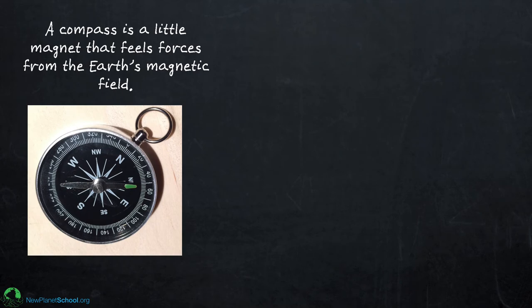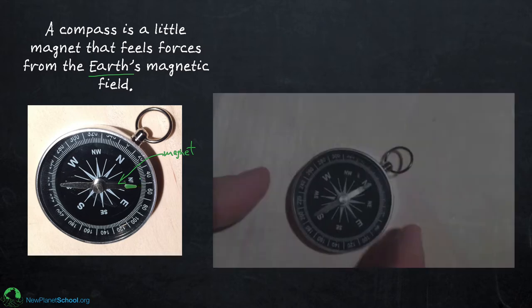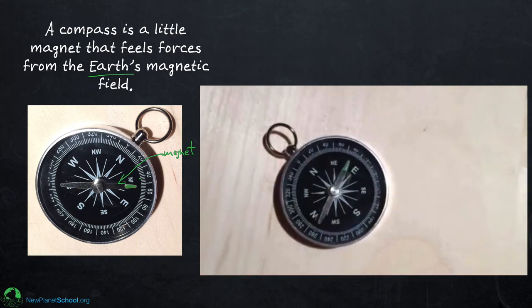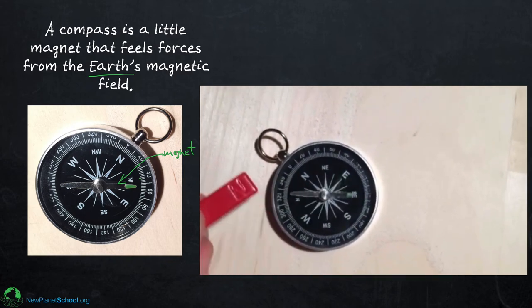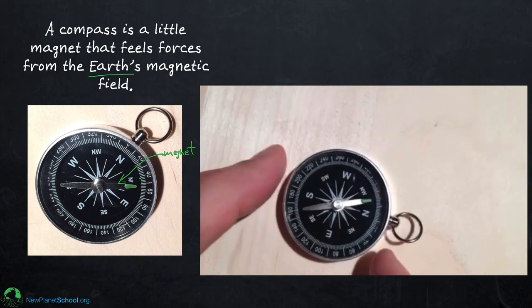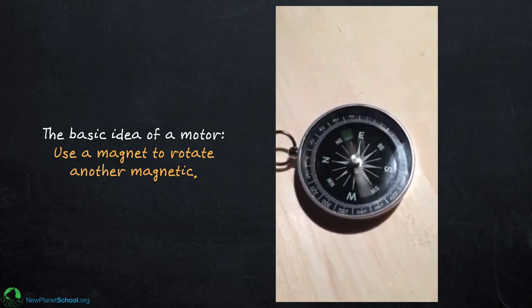A compass is a little magnet that feels the magnetic field from the earth. The earth produces a magnetic field that pushes on this little magnet. This needle is actually a magnet, so no matter where you are, this will point towards the earth's north pole. That way you can always tell which direction is north. I'll take this compass and rotate it, and you can see the needle tries to stay in the same position, always pointing north. But if I bring another magnet in there, I can overwhelm the earth's magnetic field.